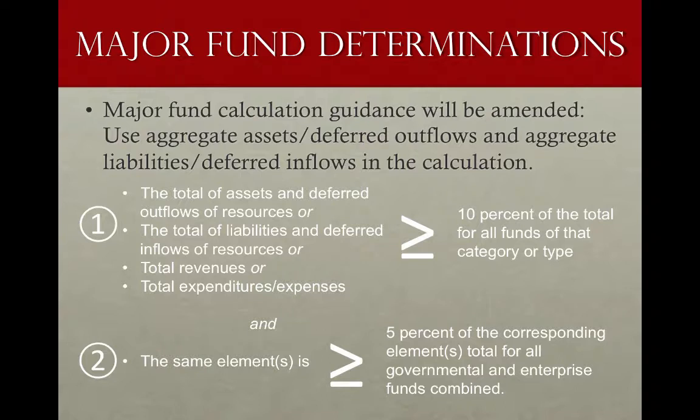What Statement 65 does to the major fund determinations is essentially add deferred outflows to assets and deferred inflows to liabilities. For an enterprise fund, if the total of its assets plus deferred outflows, or liabilities plus deferred inflows, or its revenues or expenses is greater than or equal to 10% of the total for all enterprise funds, and greater than 5% of the total for all governmental and enterprise funds combined, then that fund is required to be reported as major.